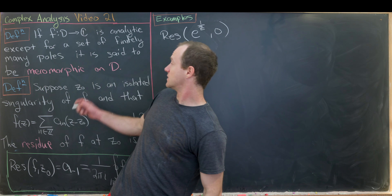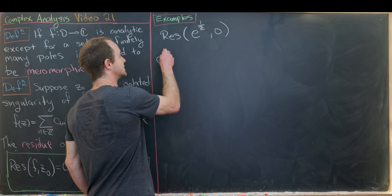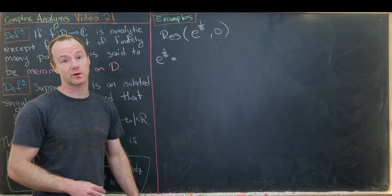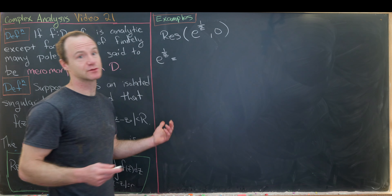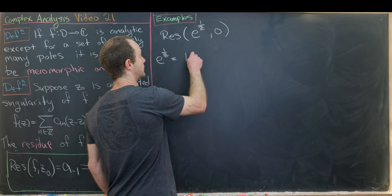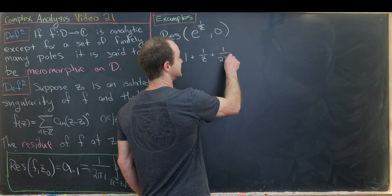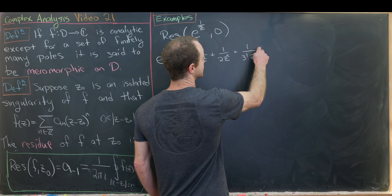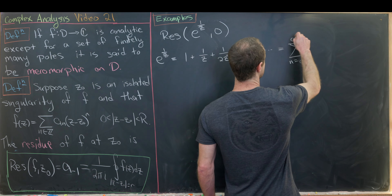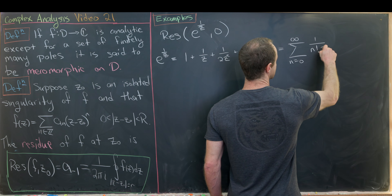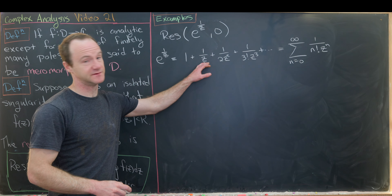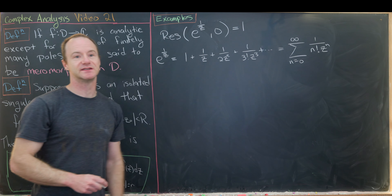We can still expand e^(1/z) as a Laurent series in the punctured disk by using the standard Taylor expansion of eˣ with x = 1/z: 1 + 1/z + 1/(2z²) + 1/(3!z³) + ⋯, which is the sum from n=0 to ∞ of (1/n!) · z^(−n). Extracting the coefficient of z^(−1) gives exactly 1, so the residue here is 1.